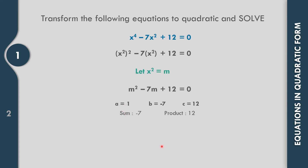Try another factor of 12: 4 × 3 gives a product of 12, but the sum is 7, also incorrect. So it must be -4 and -3. Check: (-4) × (-3) = +12, and (-4) + (-3) = -7. So the factors of m² - 7m + 12 = 0 are (m - 3)(m - 4).